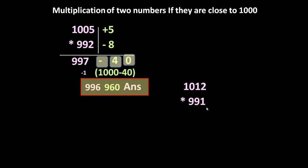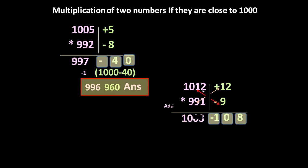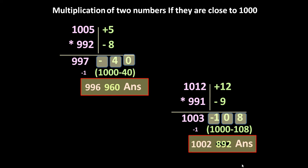One more similar problem: 1012 multiplied by 991. It is 12 greater than 1000 and 9 short of 1000. For the last three digits, 12 times 9 is minus 108 (because of opposite signs). Cross addition: 1012 minus 9 is 1003, or 991 plus 12 is 1003. Since minus 108 is negative, we compute 1000 minus 108 equals 892 and carry forward minus 1, making the first part 1003 minus 1 equals 1002. The answer is 1002 892.